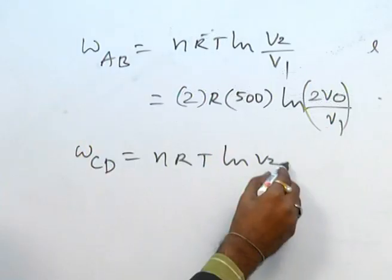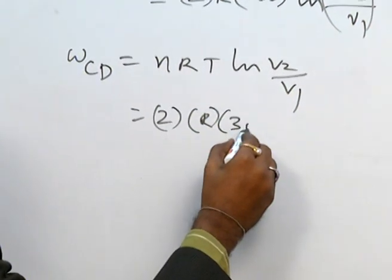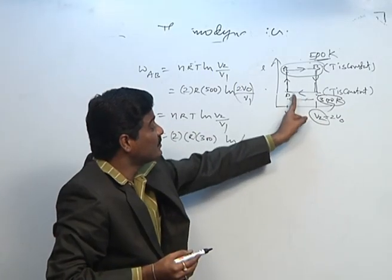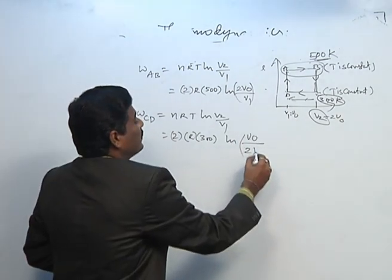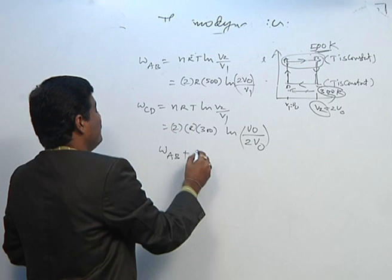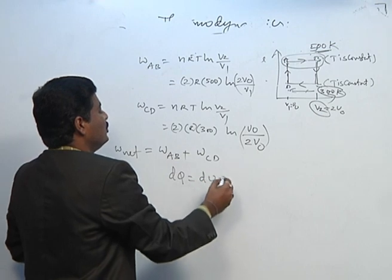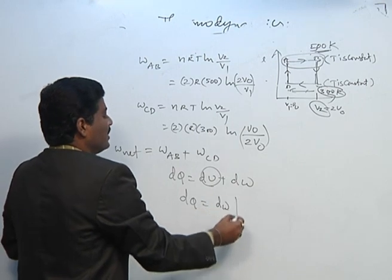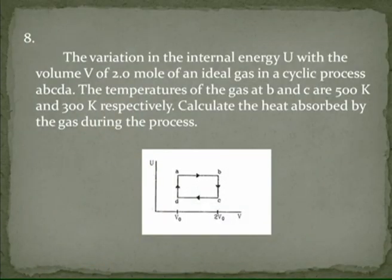For the CD process, work done = nR × 300 × ln(V2/V1). From C to D, the final volume is V0/2 and initial is V0. Substituting, we calculate work done in CD. Adding work done in AB and CD gives the net work done. Since DU = 0 for the cyclic process, DQ = net DW. This is the heat absorbed by the system — the result for this cyclic process on a U-V indicator diagram.